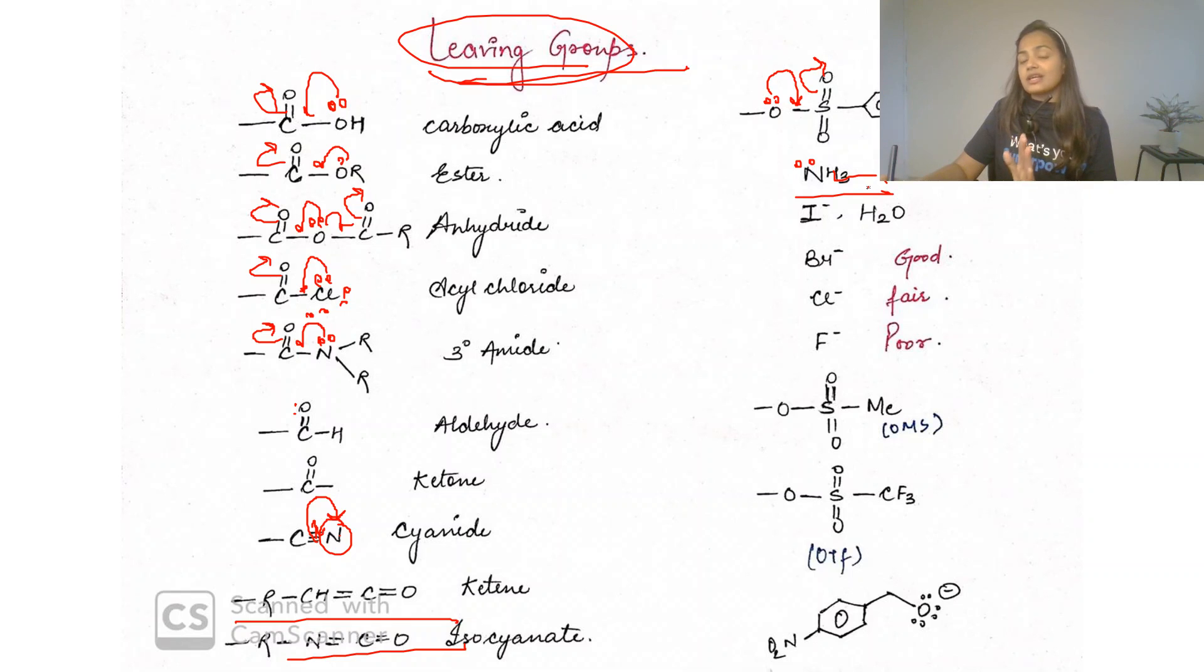It must be a weak base. But there must not be presence of any plus I group, because if you have any plus I group, it will increase electron density and it will be a strong base. That we don't want. Ammonia is a weak base, but primary amines R-NH2 or R2-NH are strong bases because of the plus I effect, increasing the electron density over nitrogen. So it's a strong base. I have not written this in the leaving group, just ammonia.